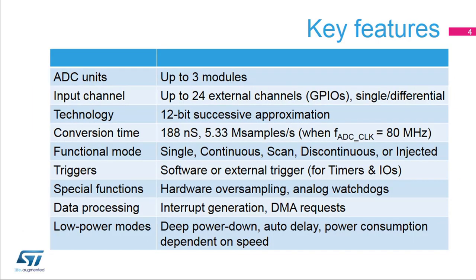Up to three analog to digital converters are integrated inside STM32L4X6 products. The input channel is connected to up to 24 GPIO channels capable of converting signals in either single-ended or differential mode. The ADCs can convert signals in excess of 5 mega samples per second. There are several functional modes and several different triggering methods. In order to offload the CPU, the ADC has three analog watchdogs for monitoring thresholds. The ADC also offers oversampling to extend the number of bits in the final conversion value. For power-sensitive applications, the ADC offers a number of low power features.